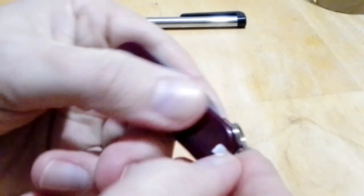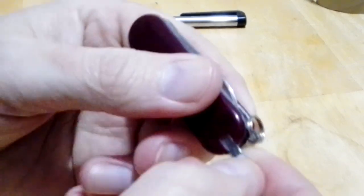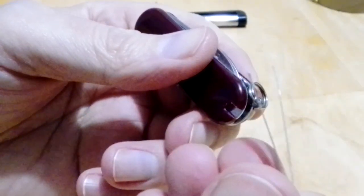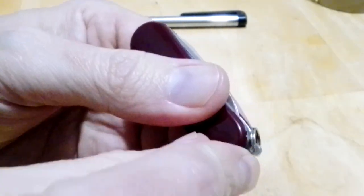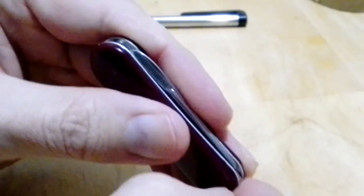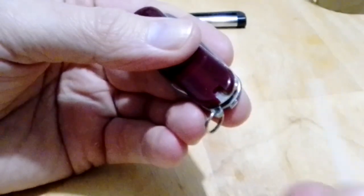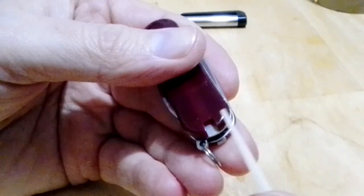And it's got tweezers which are pretty marginal. You can see how thin they are. But they're there, you can probably get a little splinter or something. Then there's the toothpick. It's just, eh, it's there I guess.